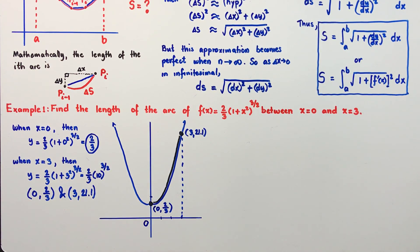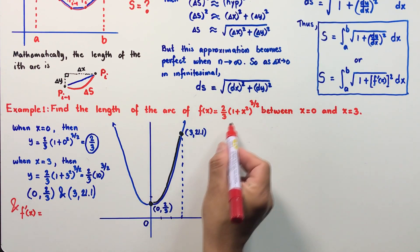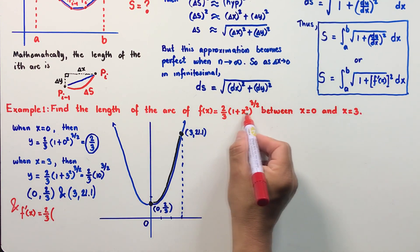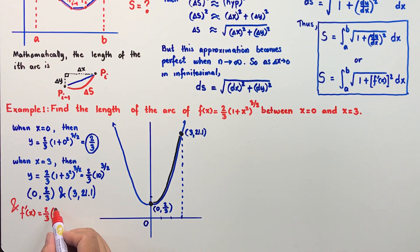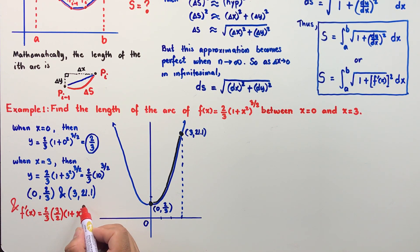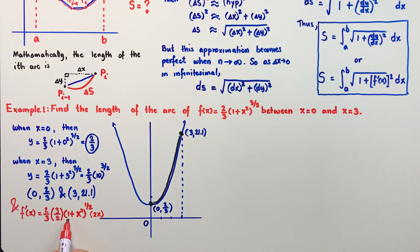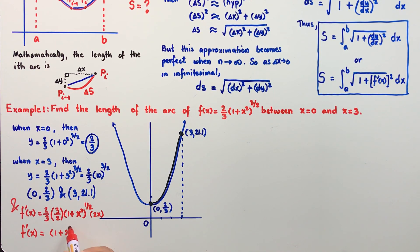According to the formula, we need to find the derivative of our function first. The derivative f prime of x equals two-thirds times 3 halves times 1 plus x squared to the power 1 half, multiplied by 2x by the chain rule. The two-thirds and 3 halves multiply to 1, so f prime of x equals 1 plus x squared to the power 1 half times 2x.